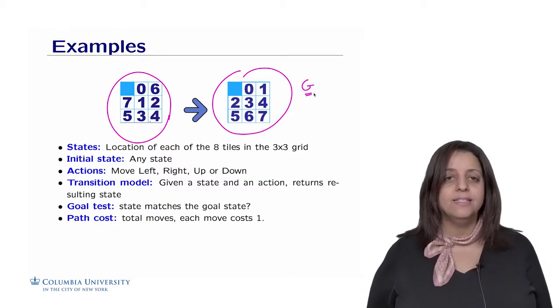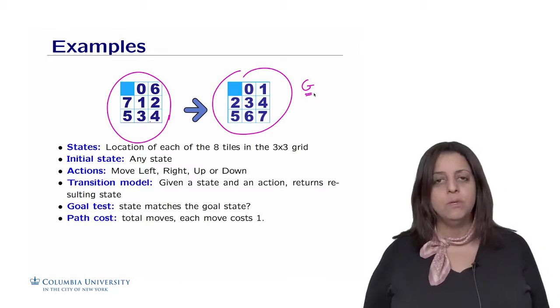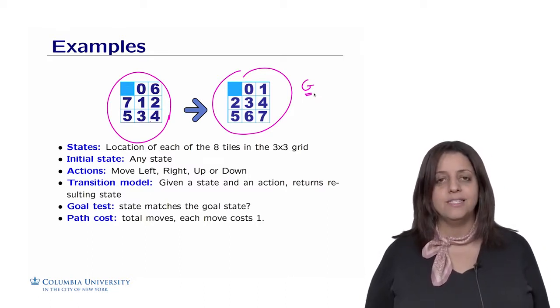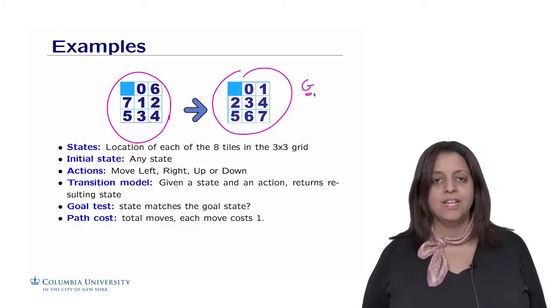The path cost, finally, is the total number of moves. We want, for example, if you want to organize these tiles by increasing order from 0 to 7, we don't want to spend a long time doing that.